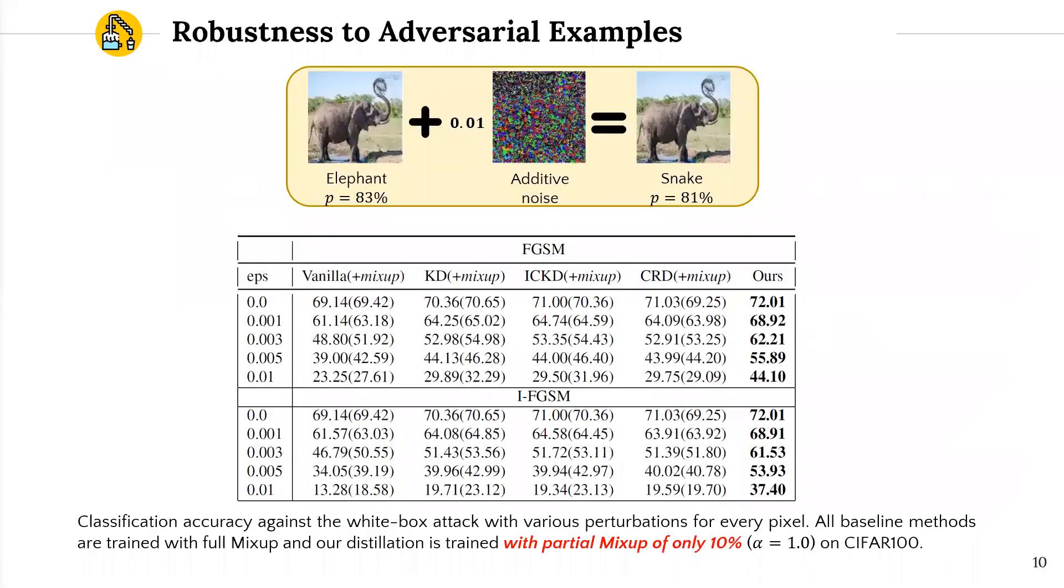We also tested the proposed model against adversarial attacks. This table shows the top-1 accuracy on different perturbation levels. For a fair comparison, we applied mix-up augmentation to all methods we explored. Even with only 10% mix-up pairs used, our methods showed impressive resistance to both FGSM and IFGSM attacks.